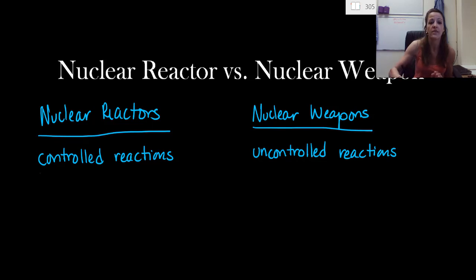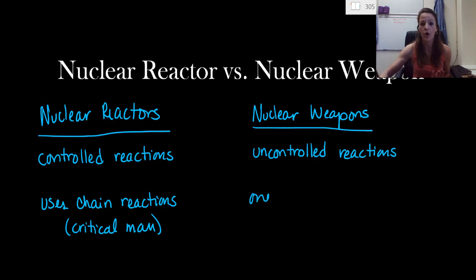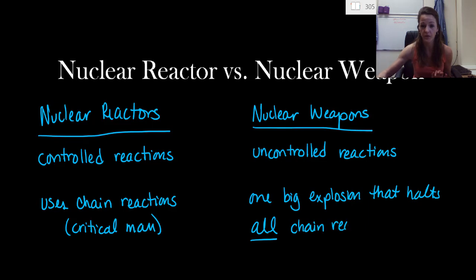All right, the second thing I want to point out, that a reactor uses chain reactions, and they do this by making sure they have a critical mass. Whereas with a nuclear weapon, that is not the case. They have one big, and I think big is an understatement, but one big explosion that halts all chain reactions. And this process occurs in less than one second.